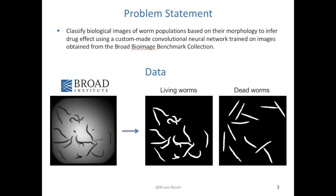For instance, the images are brighter in the middle due to the position of the lamp used to illuminate the sample, and they get dimmer as we move towards the edges. So the Broad Institute also provided the binarized equivalents, which they obtained by processing the original images using their imaging software called Cell Profiler.